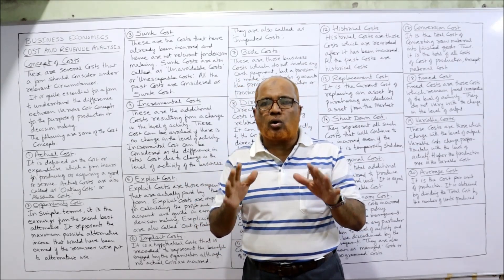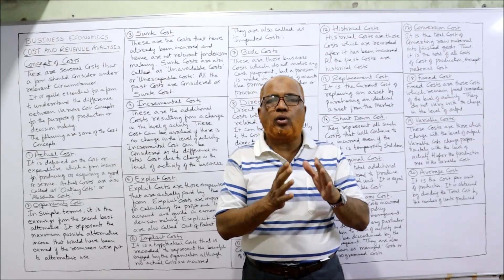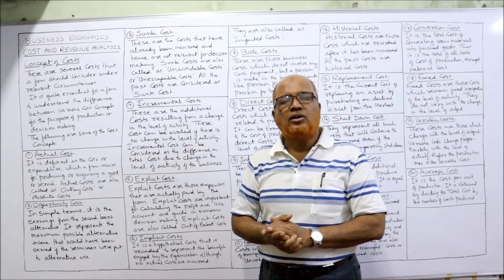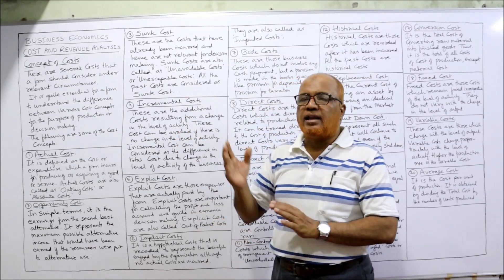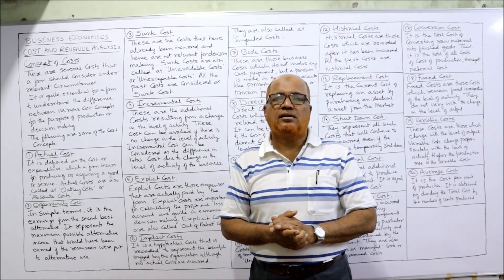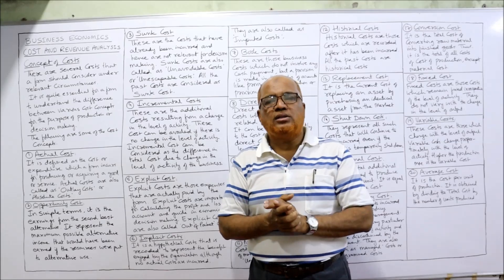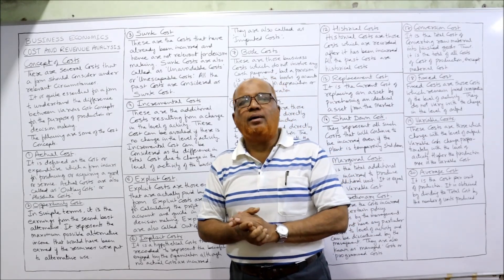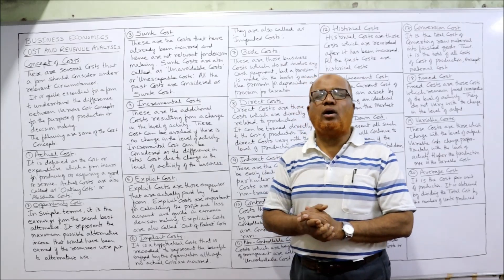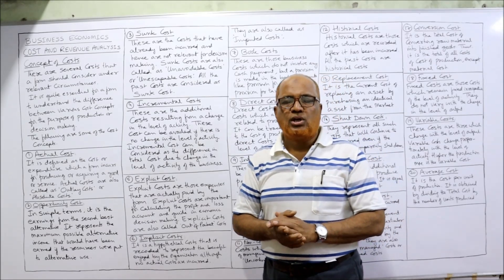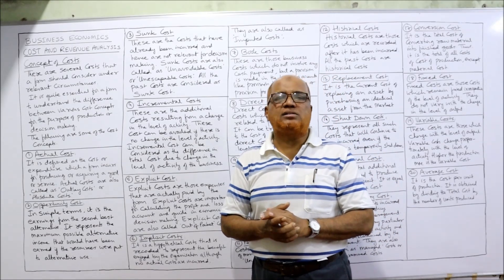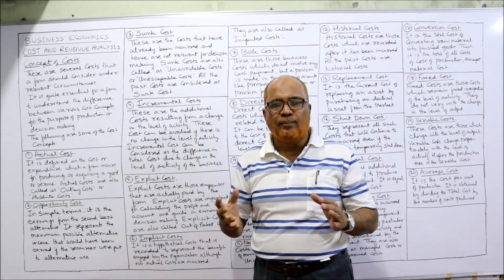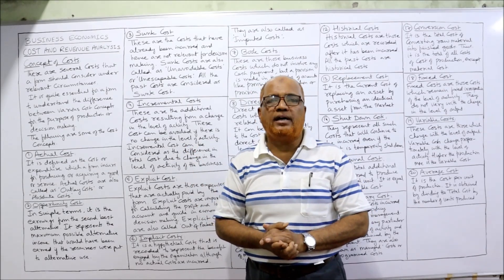These are the videos I have already given in the first four units. Now this fifth unit's topic is cost and revenue analysis. This is the first video on unit number five. In this video I am going to explain the different concepts of cost. Before explaining the different concepts, please take a screenshot of the points I have written on the board, then I will explain all the points in detail.